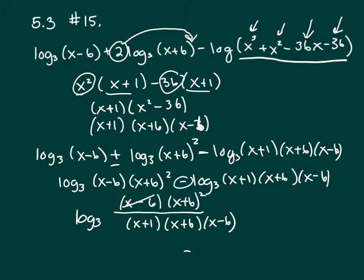So the x minus 6s will cancel, and one of the x plus 6s will cancel. So I'm left with log base 3 of x plus 6 over x plus 1. All right.